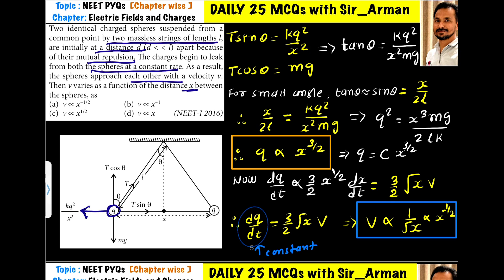The electrostatic force acts towards the left side on this sphere, which is given by kq²/x². The gravitational force mg acts downward, and in this thread, due to these two forces, a tension T is developed. If we assume angle θ here, then this tension T has two components: T cos θ vertically upward and T sin θ in the horizontal direction.